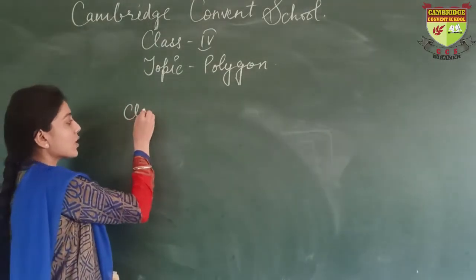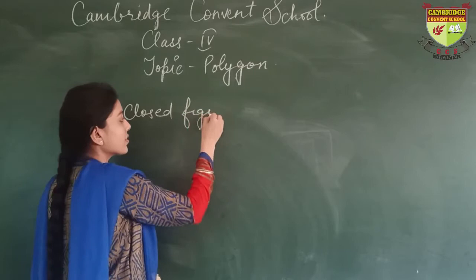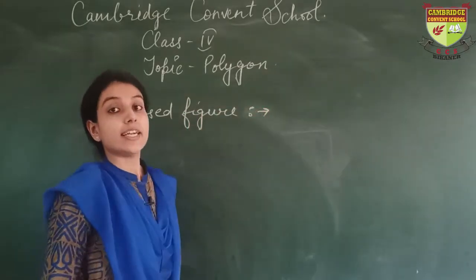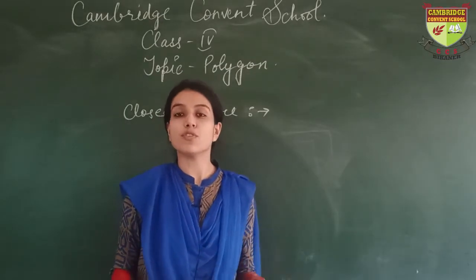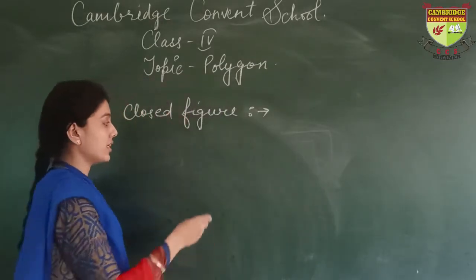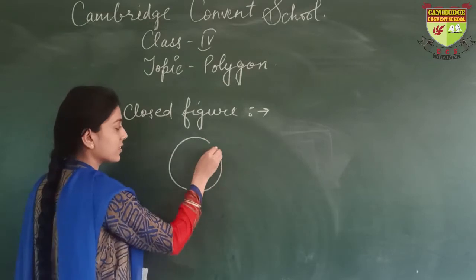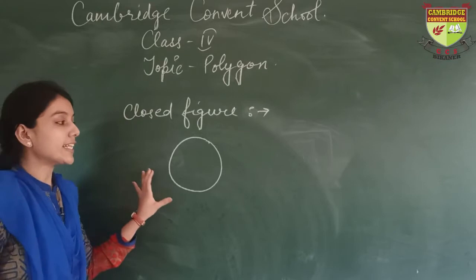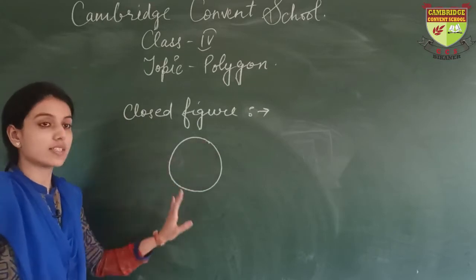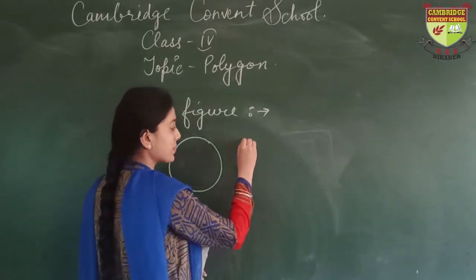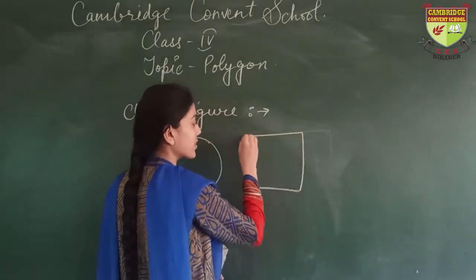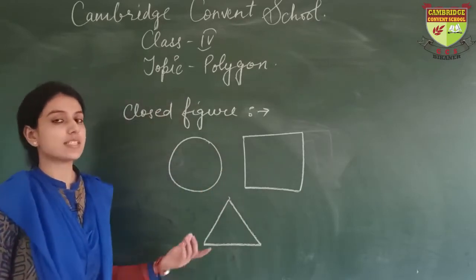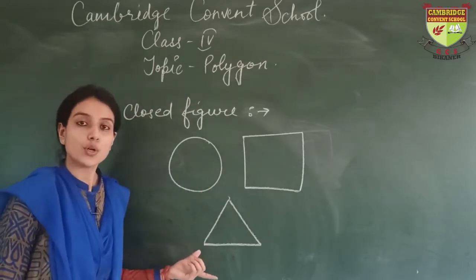The first one is closed figure. A figure that does not intersect itself more than once is called a closed figure. Here the starting and ending point are the same. Examples of closed figures include a square and a triangle. So these are the examples of closed figures.